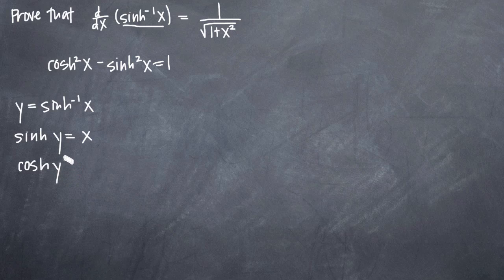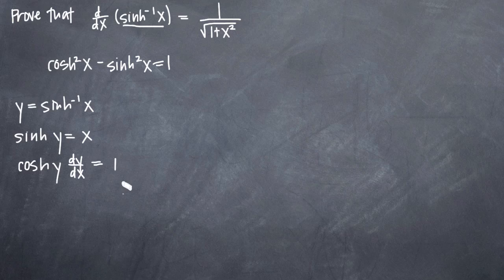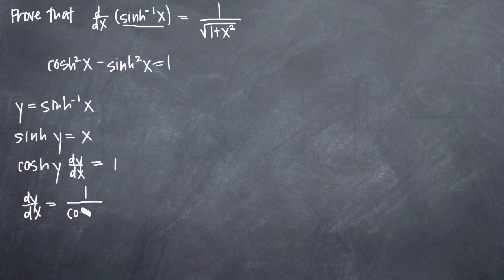Whenever we take the derivative of y, we multiply by dy/dx — that's the rule of implicit differentiation. On the right-hand side, taking the derivative of x with respect to x is straightforward: we just get 1. We then solve for dy/dx by dividing both sides by hyperbolic cosine of y.